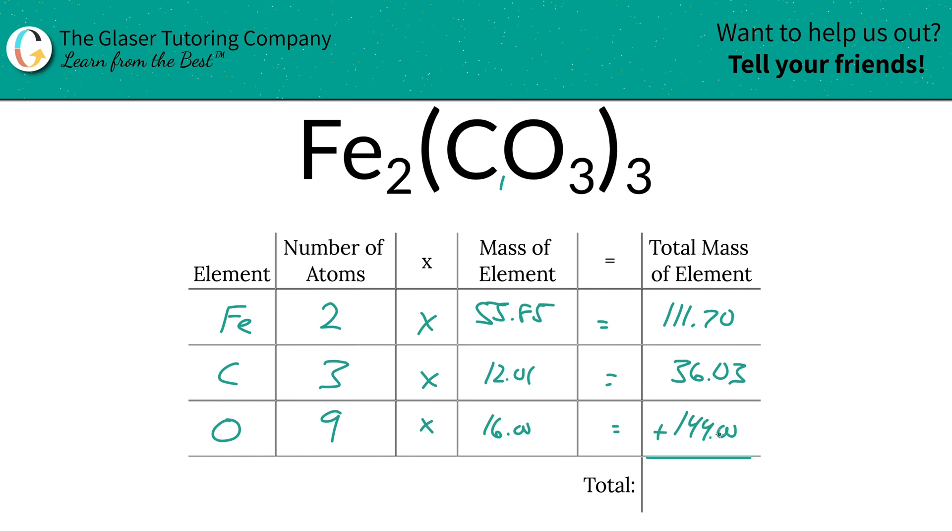To then find the total mass of the entire compound, all you have to simply do now is add up this particular column. And when you do that, we find a total mass here of 291.73. So that was the first step of the process, to find that total mass.